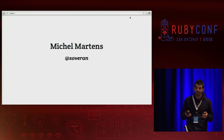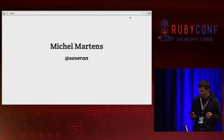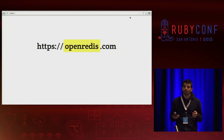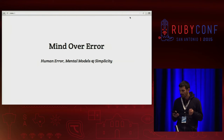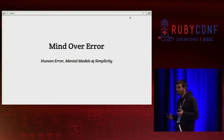My username on Twitter and GitHub is Sobrant. Most of the code I write is open source and it's in my GitHub account. I have a company called OpenRAIDIS. RAIDIS is an in-memory database. And this presentation is about human error and how it relates to the concept of mental models and simplicity.